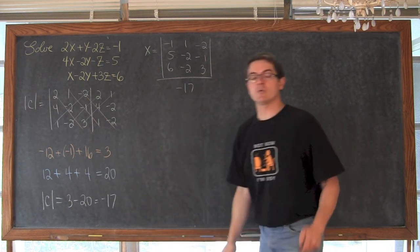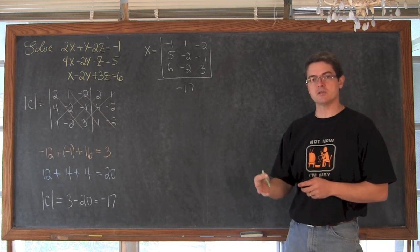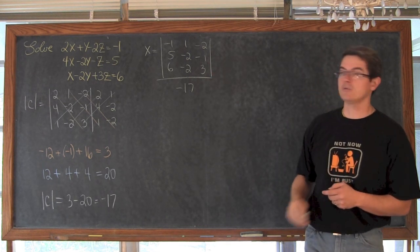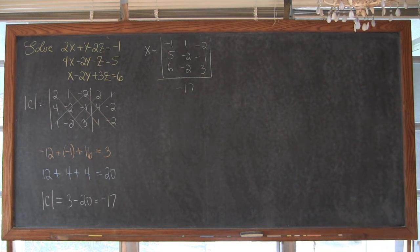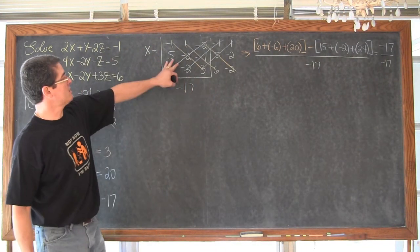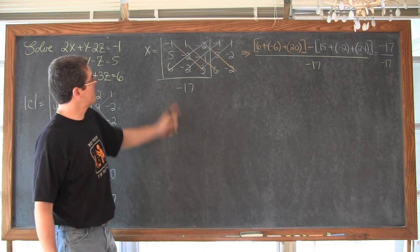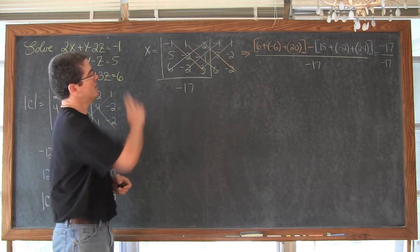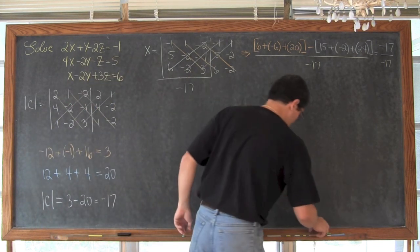I don't think you really want to see me do a bunch of arithmetic in my head, so let me step out, give you the solution, and we will repeat it for y and z. I have taken those first two columns, copied them, did my diagonals, multiplied, and subtracted. We ended up with x equals negative 17 over negative 17, which of course means that x is equal to 1.